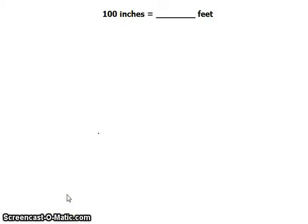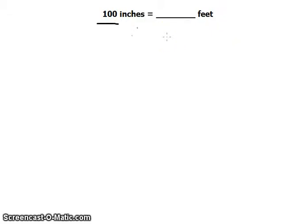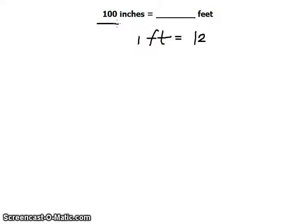Hi there, this is Ken and we have here another simple unit conversion problem involving length measurements. This time we are required to convert kilometers to miles — miles can also be written as MI. We are given 1.00 kilometers, which has three significant figures, and we need to look at our conversion tables or recall a relation from miles to kilometers.